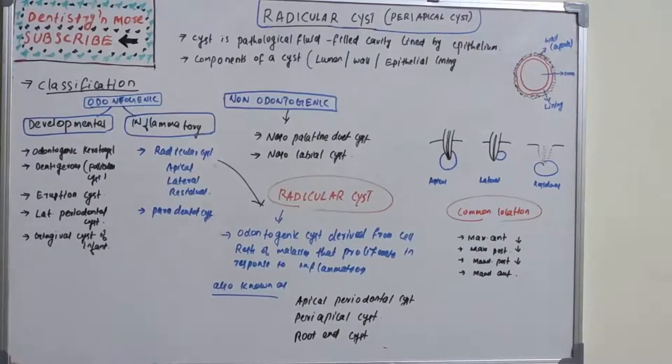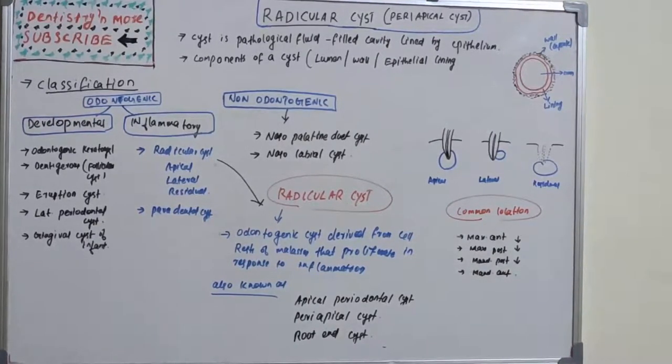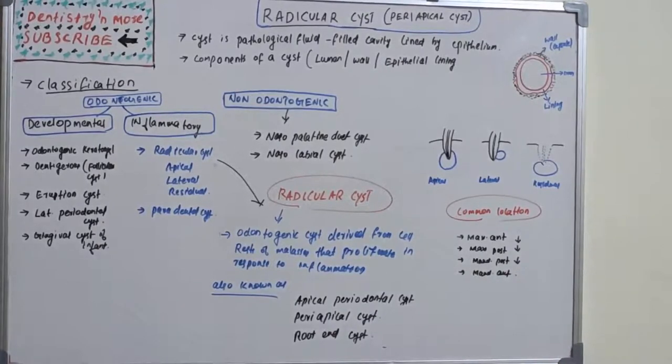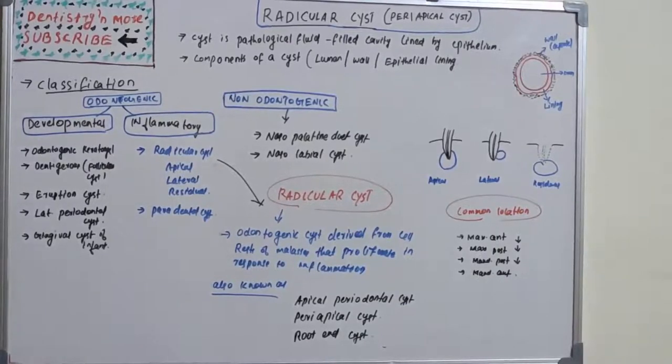Hello everyone, welcome back to another session of Dentistry and More. In oral pathology, so far we finished important syndromes and important tumors. Now we are moving on to important cysts. We have radicular cyst, odontogenic keratocyst, and dentigerous cyst. These three are the most important ones for university exams, so let's get into the details of radicular cyst.